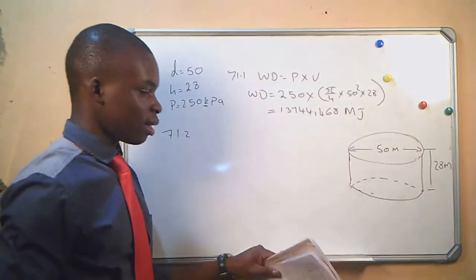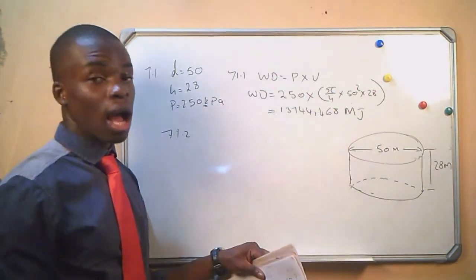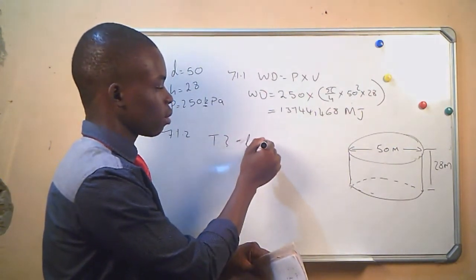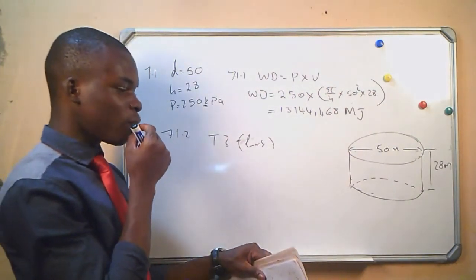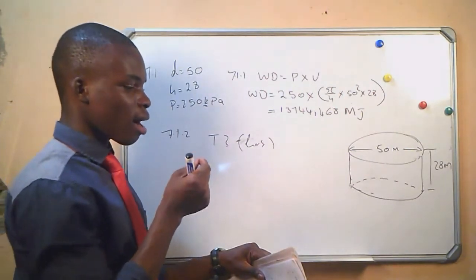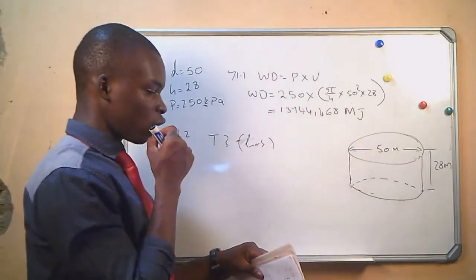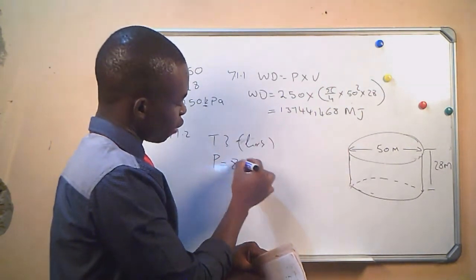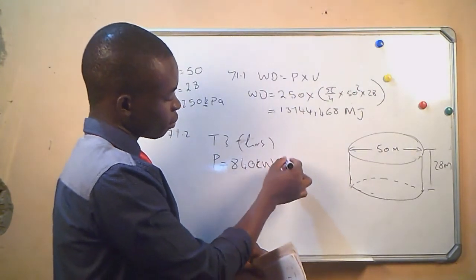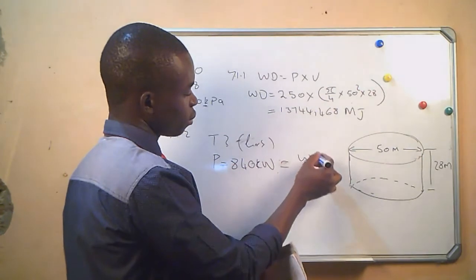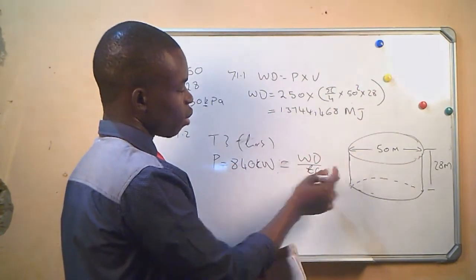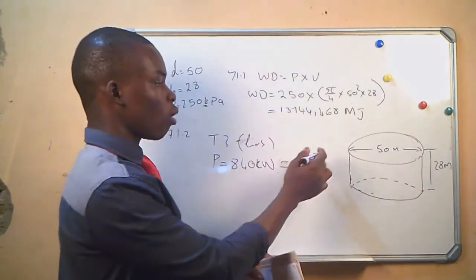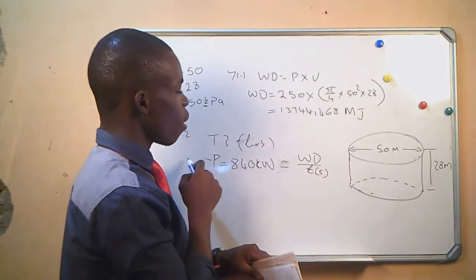Question 7.1.2 asks us to determine the time in hours it will take to drain the dam if a power of 840 kilowatts was applied. We are given power = 840 kilowatts. We know that power equals work done divided by time in seconds — the SI unit for power is joules per second.